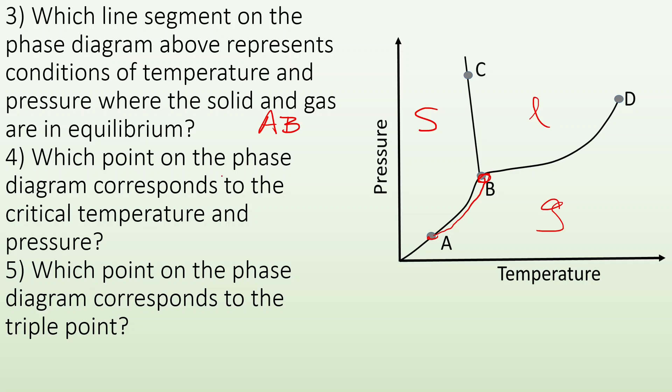Four: which point on the phase diagram corresponds to the critical temperature and pressure? That is going to be point D as in David. So this right here, you follow that line down, that's your critical temperature. You follow it over, that's your critical pressure.